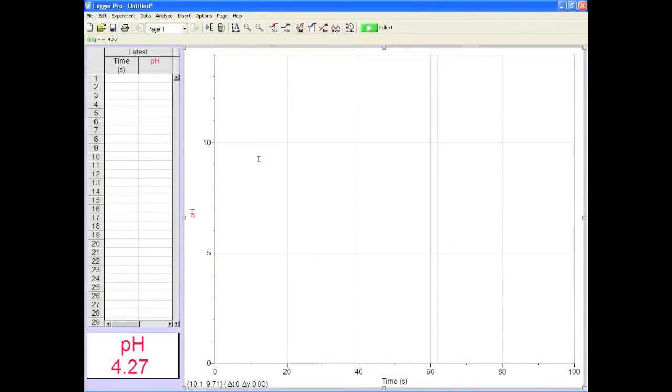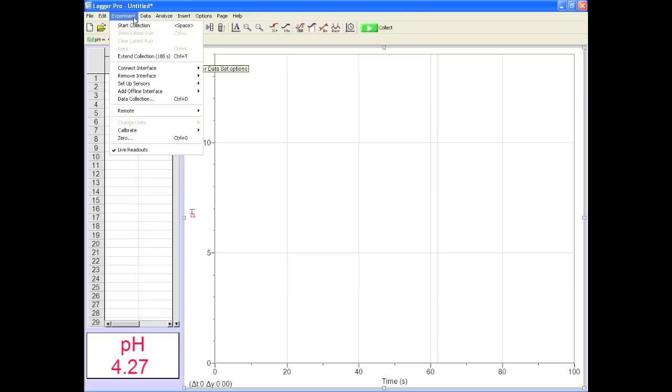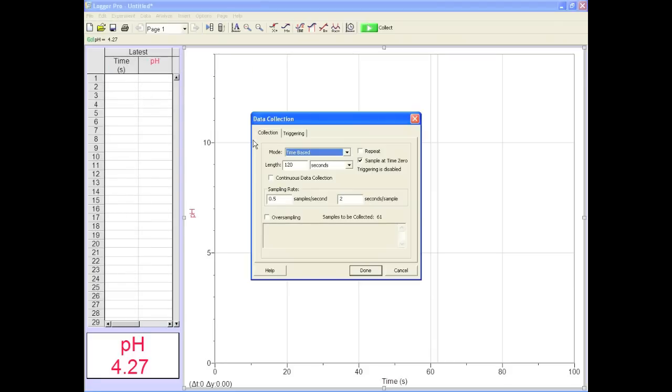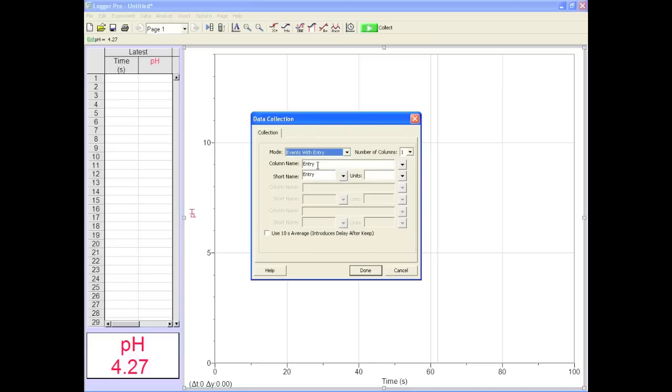Now you gotta make sure the software is set up and ready to go. Click on experiment, data collection, and change time base to events with entry. You're gonna need to fill in the boxes that appear with the correct volume units and stuff so your graph looks right. Done.